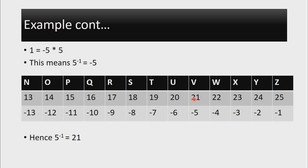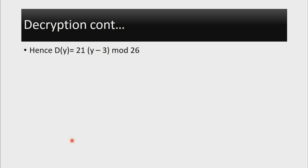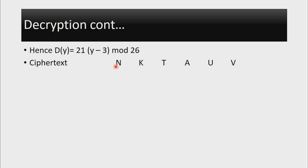Now that we've calculated the inverse, the next step is to use it in the equation. The decryption of an element Y is D(Y) = 21(Y - 3) mod 26, where 21 is the inverse of 5 and 3 is B. Just like with encryption, we apply the same process when decrypting. The first thing is to list out the ciphertext NKTAUV, then show the numerical values: N is 13, K is 10, and so on.